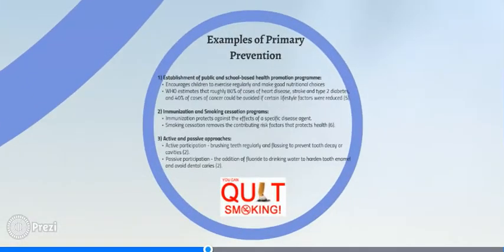An example of primary prevention is enforcing public and school-based health promotion programs. This can encourage children to exercise regularly and make good nutritional choices to help prevent childhood obesity and related disorders such as diabetes. Another example would be immunization and smoking cessation programs, which protect against the effects of a specific disease agent and overlap with health promotion.